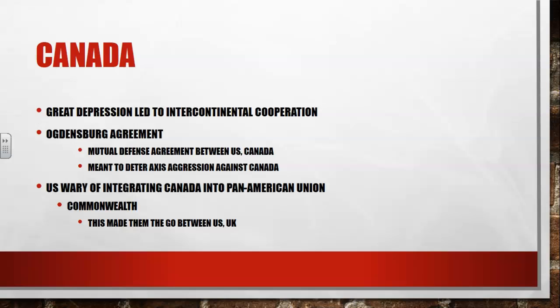The United States was going to be wary of integrating Canada into the Pan-American Union. The reason they did not want to let Canada into the Pan-American Union is because Canada is still a part of the Commonwealth. They felt this would be a violation of the Monroe Doctrine — remember, the Monroe Doctrine means no European influence in the Americas. Canada, because it's a commonwealth, still has to relate to the United Kingdom. Therefore, if Canada is part of the Pan-American Union, it's like bringing the United Kingdom's influence into the Pan-American Union, which is a violation of the Monroe Doctrine, something the United States does not want.